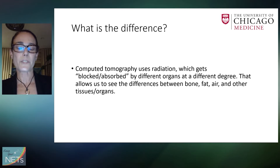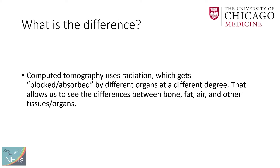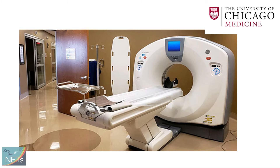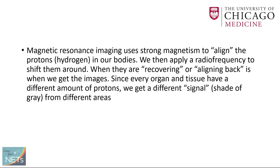What is the difference between those? Computer tomography uses radiation, which gets blocked or absorbed by different organs to a degree. That's what allows us to see the differences between bone, fat, air, and other organs and tissues. This is an example of a CT machine, and these are the types of images we get from a CT exam — that's what I see in the reading room.